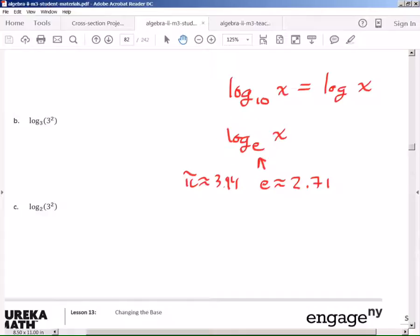But we don't normally write log e, just like we don't normally write log 10. We normally write natural log of x. The reason why the l is first is because it's Latin. Latin normally says the noun first and then the descriptor right after that. So this is called natural log of x.